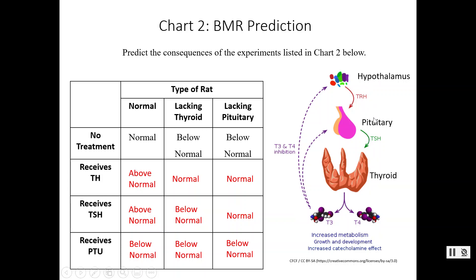If anything in this pathway is disrupted, the effects cascade. If your hypothalamus doesn't release TRH, your pituitary is not stimulated, TSH is not released, your thyroid is not stimulated, thyroxine is not produced, and your BMR will be below normal. Every disruption at a different level produces different downstream effects, so take time to truly understand this entire pathway.